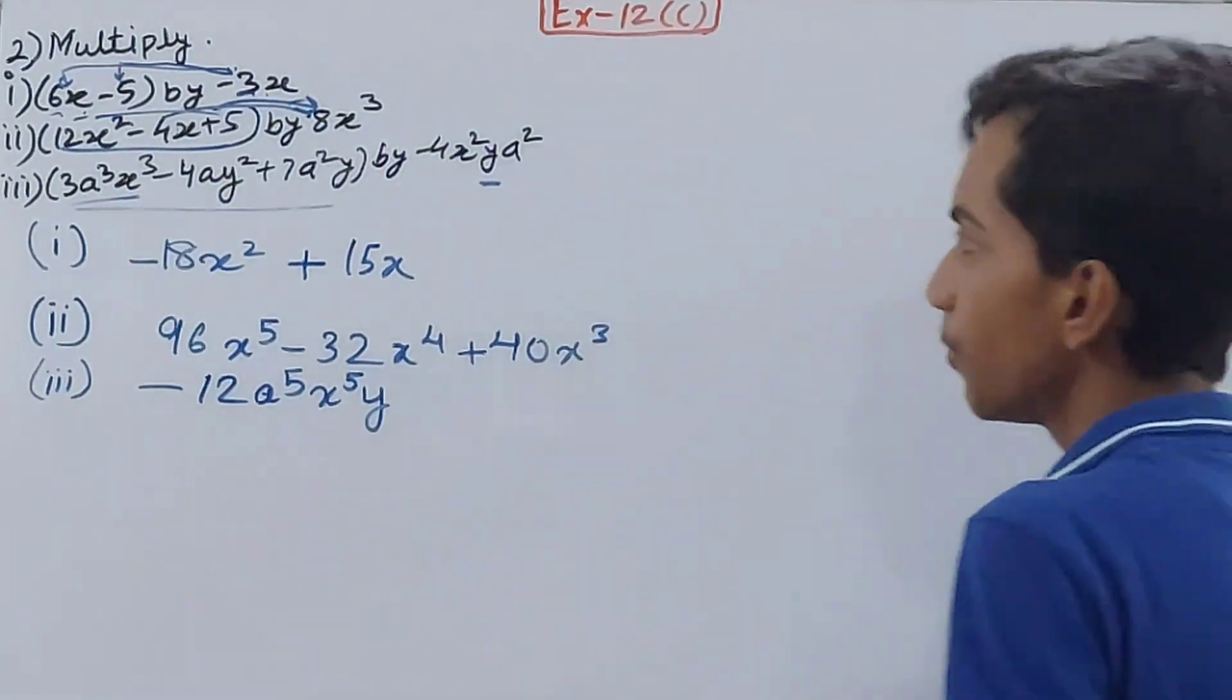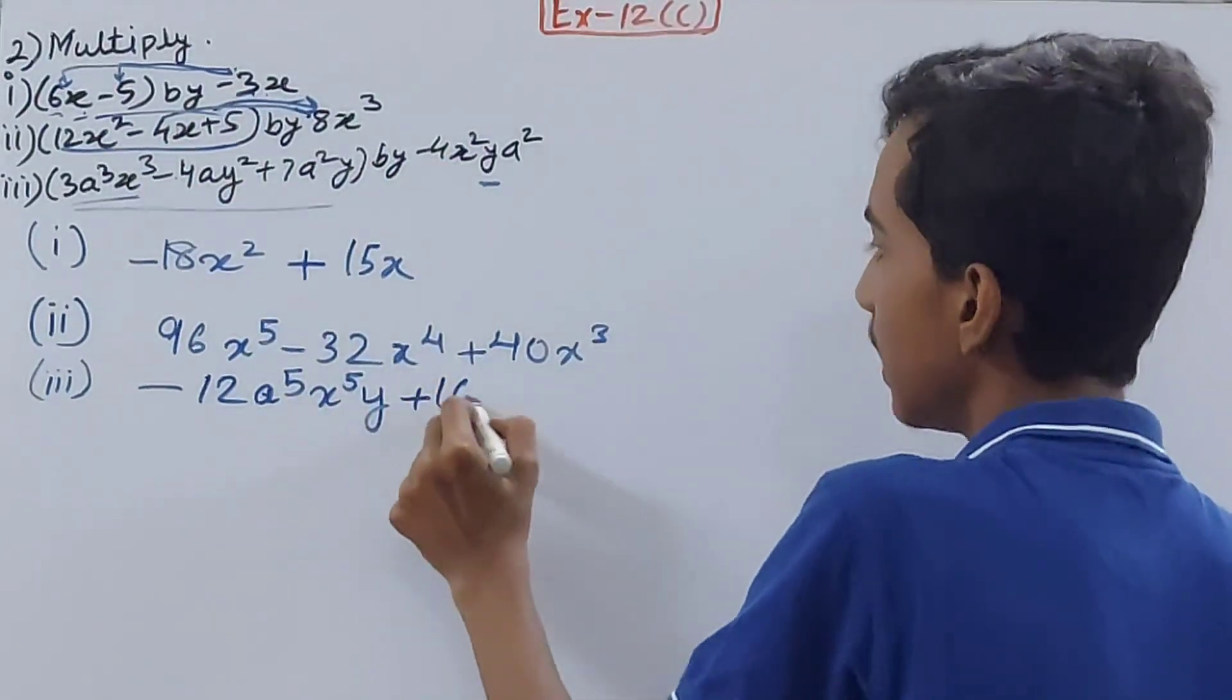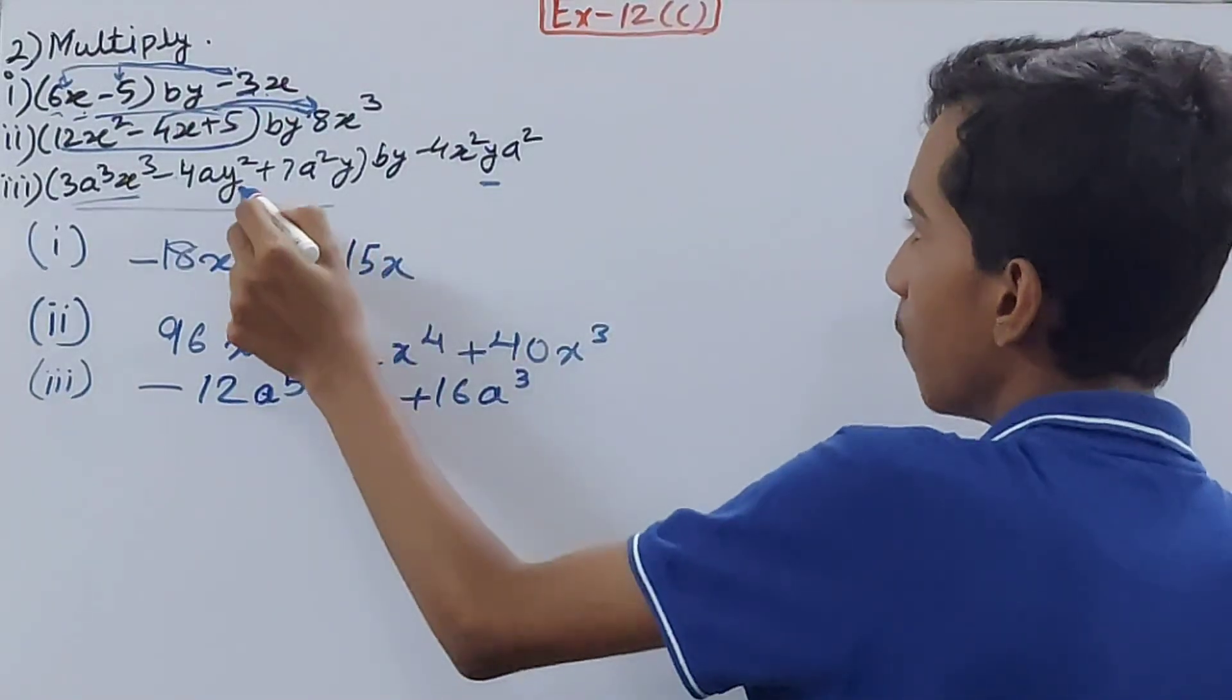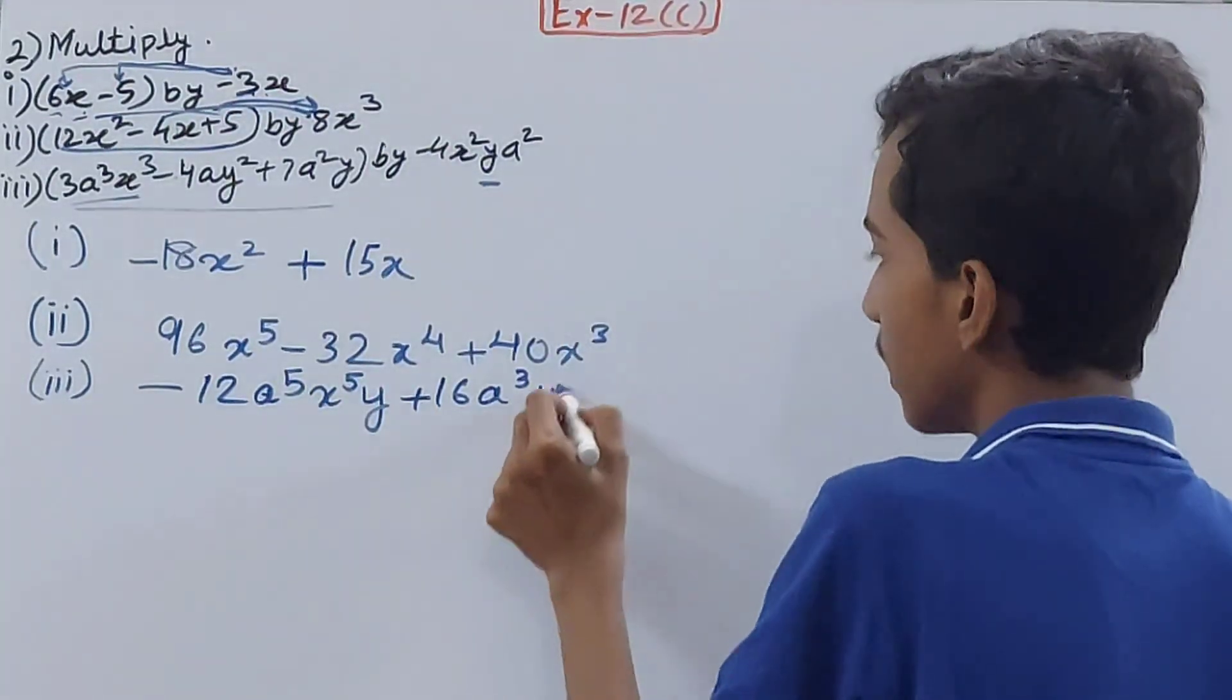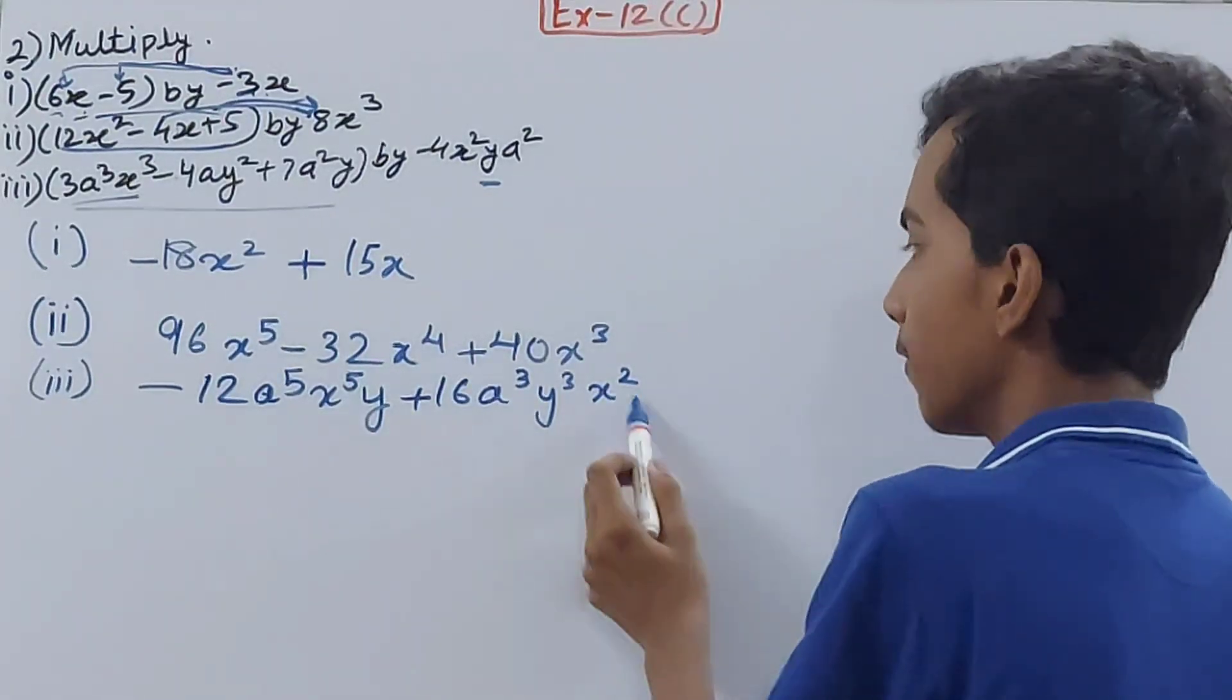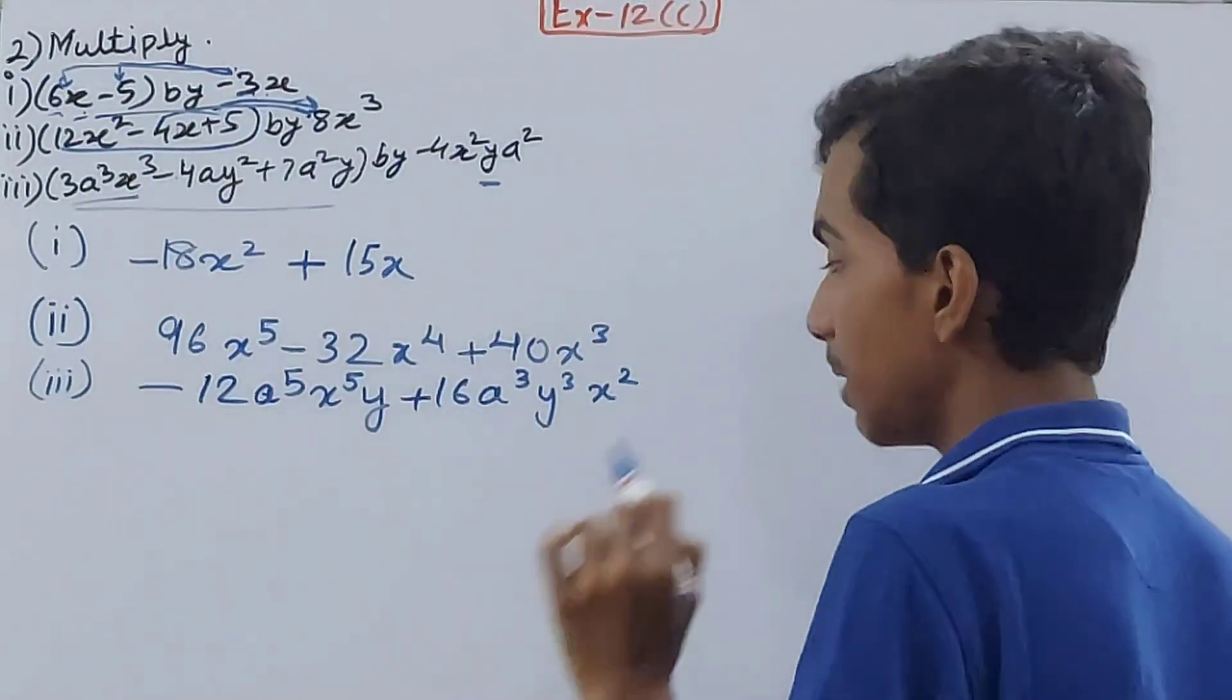a into a² is a³. y² into y is y³. And x² here. The order can change—a can come after, x can come before—doesn't matter, but the variables and powers should be the same.